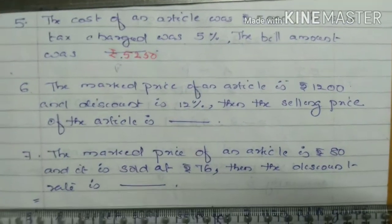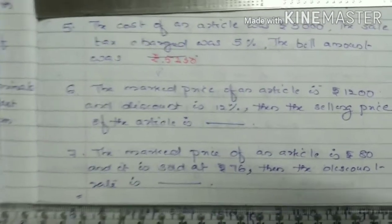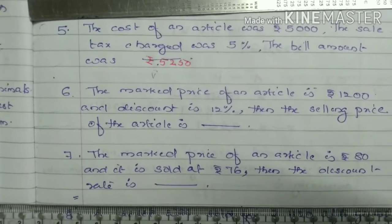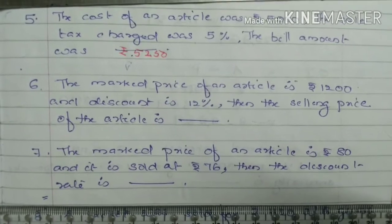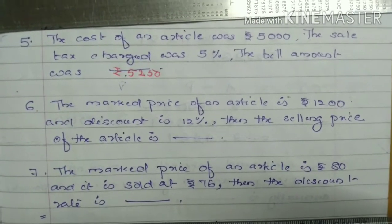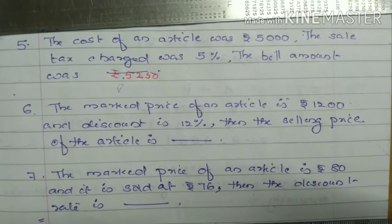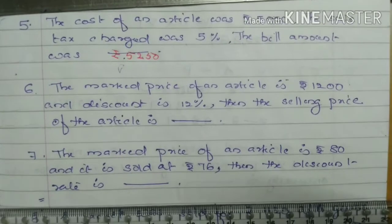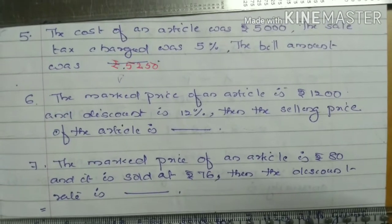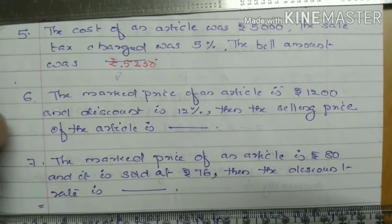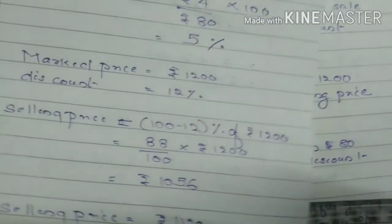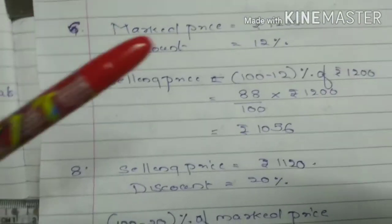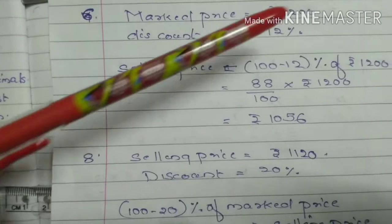6th question: The marked price of an article is Rs. 1,200, and the discount is 12%. Then find the selling price. Here, discount is given.